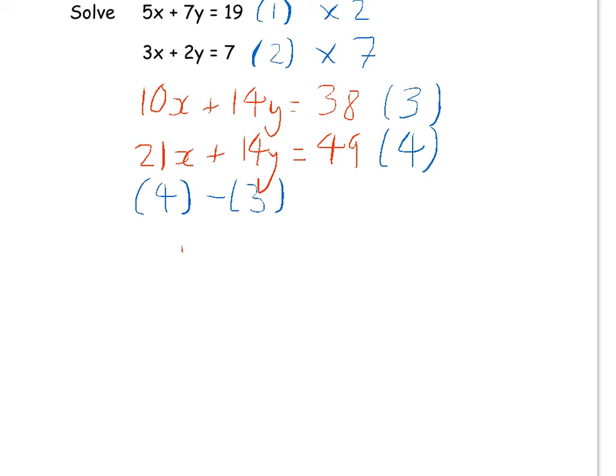Twenty-one x take away ten x is eleven x, and forty-nine take away thirty-eight happens to be eleven, so x is equal to one.